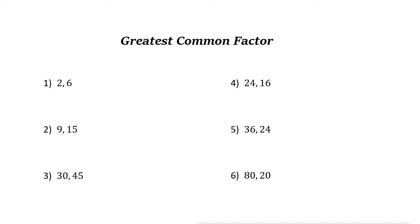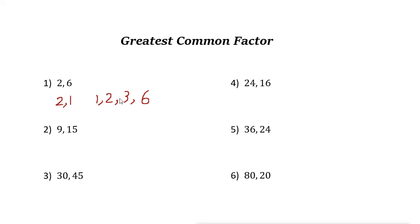To find the greatest common factor of two numbers, first we need to factorize the numbers. The factors of 2 are 1 and 2. The factors of 6 are 1, 2, 3, and 6. Both numbers share 1 and 2, and the biggest common number is 2, so the greatest common factor of 2 and 6 is 2.